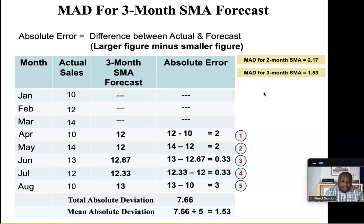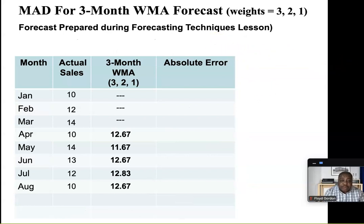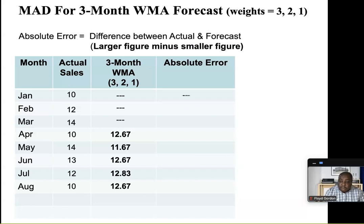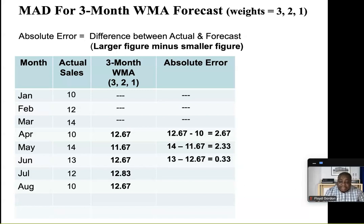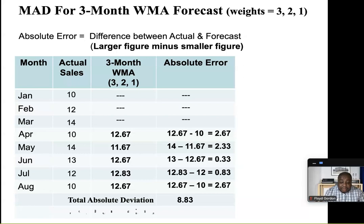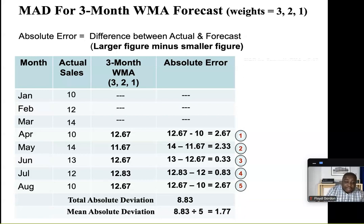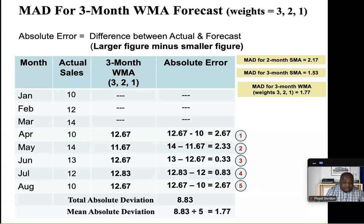But we're not finished — we need to look at the other techniques as well. For the three-month weighted moving average with weights 3, 2, 1, ignore the first three months again. For April: 12.67 minus 10 = 2.67. For May: 14 minus 11.67 = 2.33. For June: 13 minus 12.67 = 0.33. For July: 12.83 minus 12 = 0.83. August: 12.67 minus 10 = 2.67. This gives us a total deviation of 8.83. Dividing by 5 we get 1.77 for the MAD. So far: two-month SMA = 2.17, three-month SMA = 1.53, three-month WMA (3,2,1) = 1.77. The three-month simple moving average is still the most accurate so far with the lowest MAD.